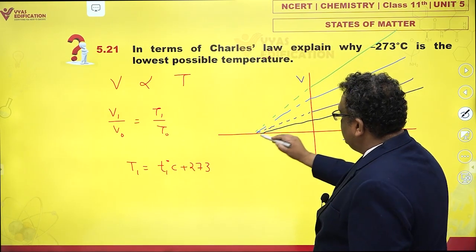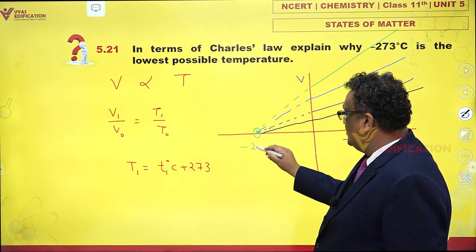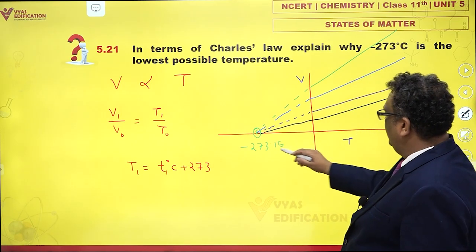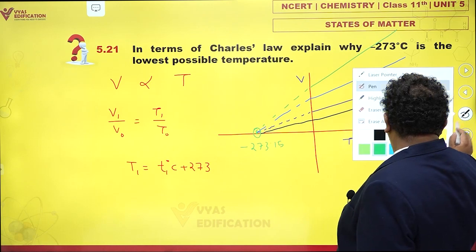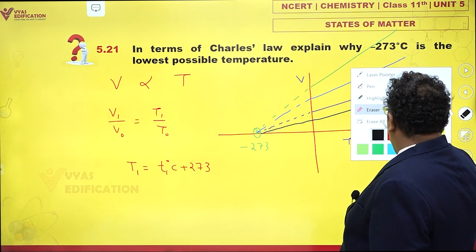And all these lines converge at a single point. And what is this point? This is minus 273.15. Yeah, if you neglect this 0.15, normally people just approximate this, minus 273 degrees Celsius.